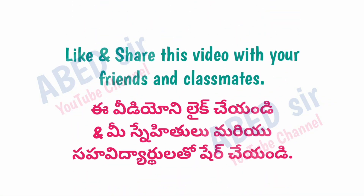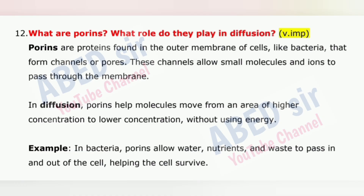Next important question is 12: What are porins? What role do they play in diffusion? Porins are proteins found in the outer membrane of cells, like bacteria, that form channels or pores. These channels allow small molecules and ions to pass through the membrane. In diffusion, porins help molecules move from an area of higher concentration to lower concentration without using energy. For example, in bacteria, porins allow water, nutrients, and waste to pass in and out of the cell, helping the cell survive.